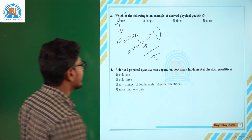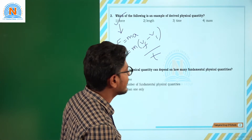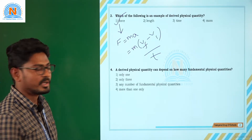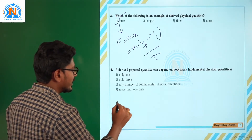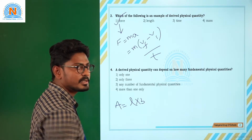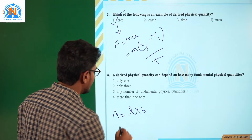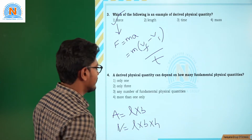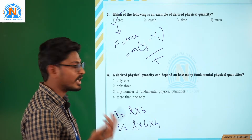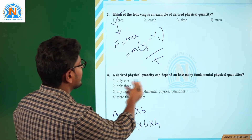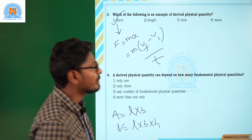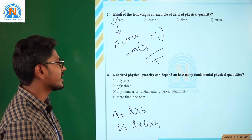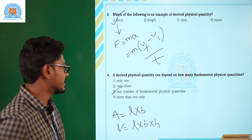Moving on to the next question: a derived physical quantity can depend on how many physical quantities? If you observe question 2, area depends on L into B — two quantities. Volume depends on three — length, breadth, height. So a derived quantity may depend on one, two, three, or any number of fundamental physical quantities. The correct answer is option number 3: any number of fundamental physical quantities.